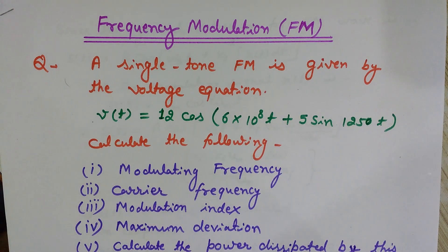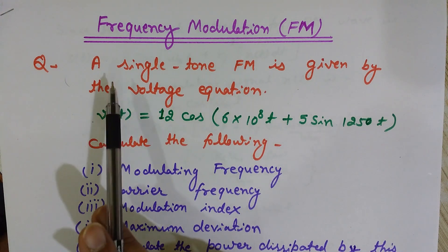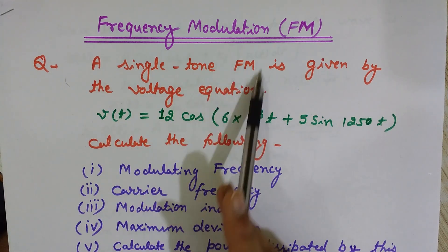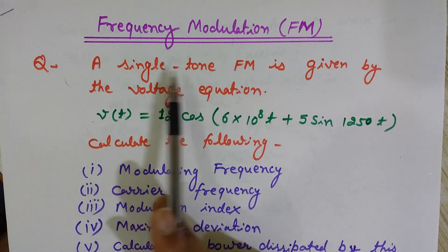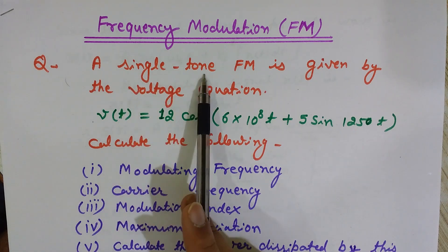What do we mean by frequency modulation? In frequency modulation, the frequency of the carrier wave is varied according to the instantaneous value of the modulating signal. The modulating signal is the message signal. In this problem, I have a single tone FM — frequency modulation — which means the message signal contains only a single frequency.